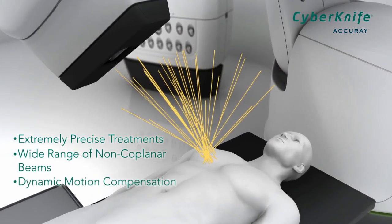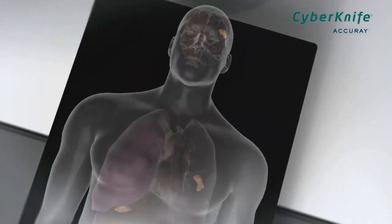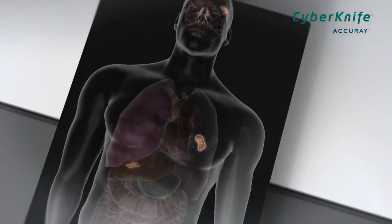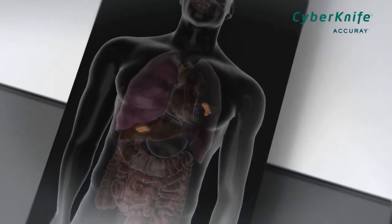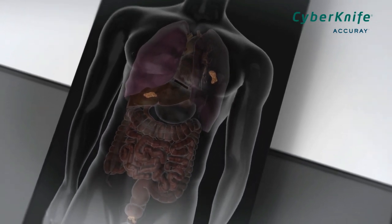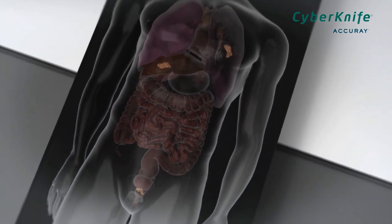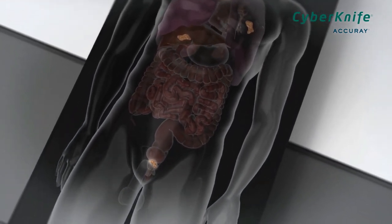Additionally, the workspace is comprised of pre-assigned points in space, termed nodes, where the manipulator is allowed to stop in order to deliver a radiation dose. At each node, the LINAC can deliver radiation from multiple beam angles.